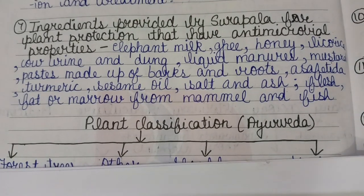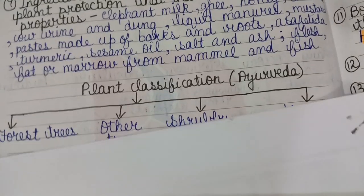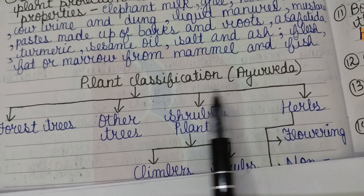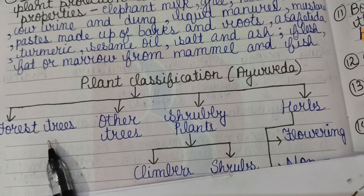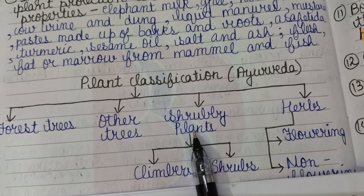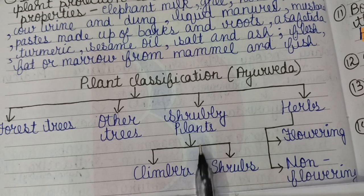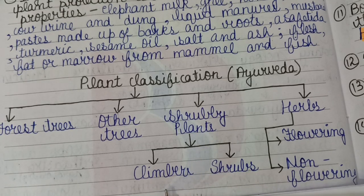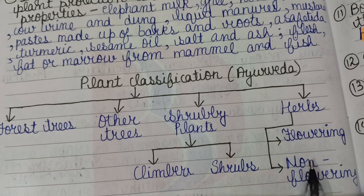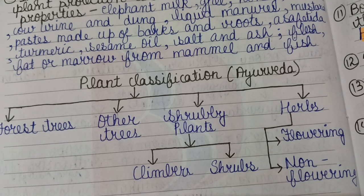According to Ayurveda, plants are further categorized as forest trees, other trees, shrubby plants, and herbs. Shrubby plants are further categorized into climbers and shrubs, and herbs are categorized into flowering and non-flowering plants.